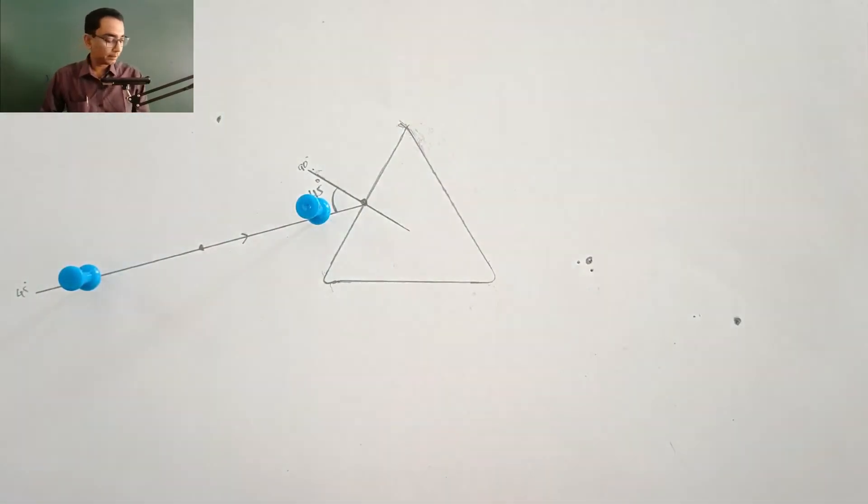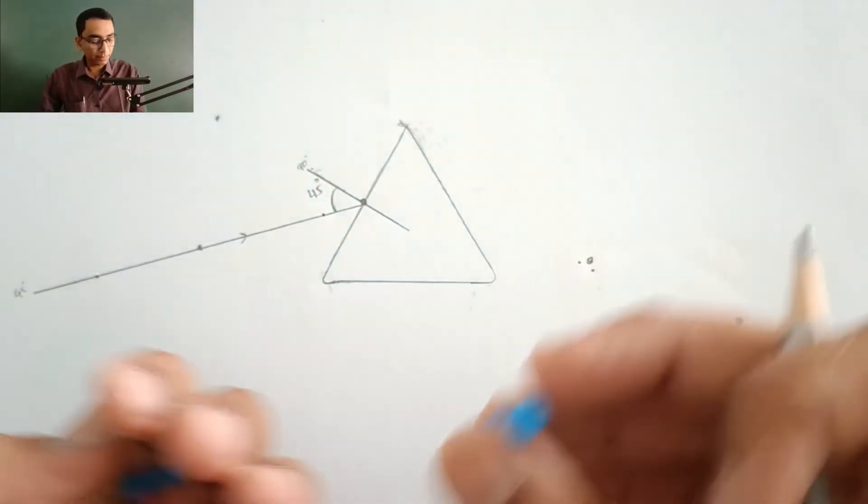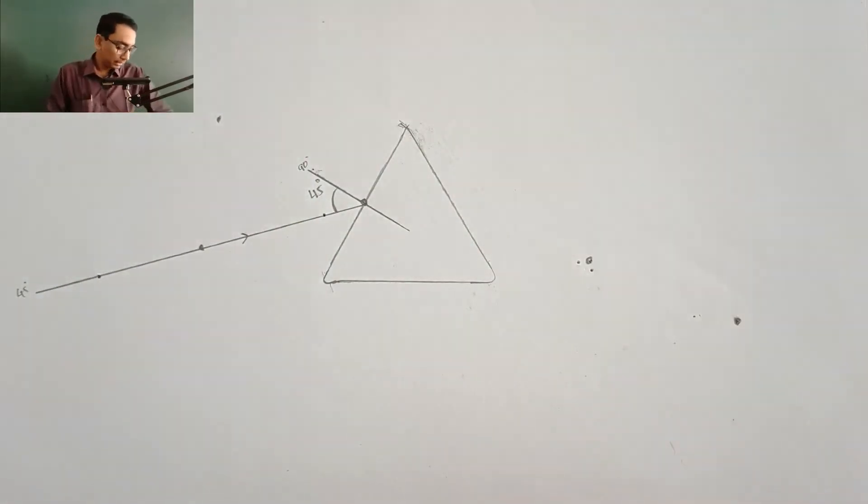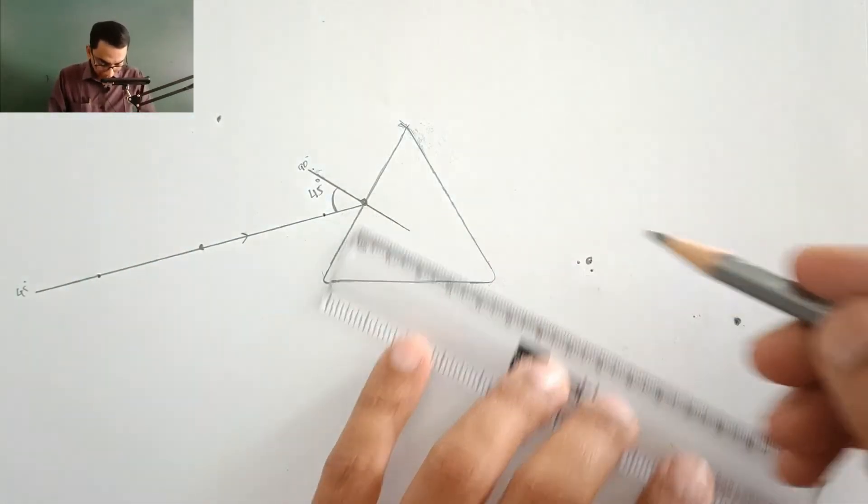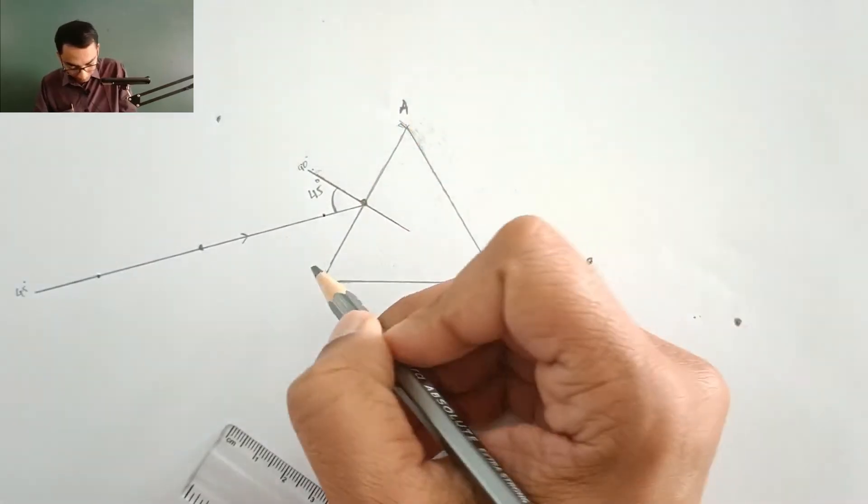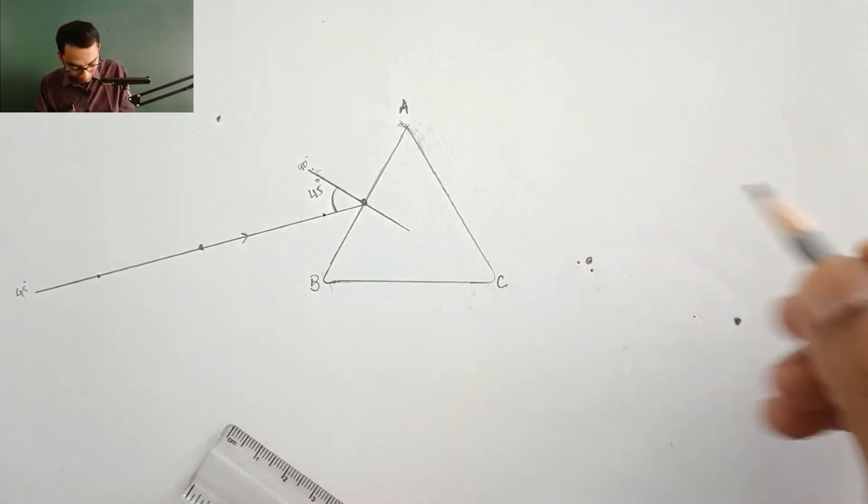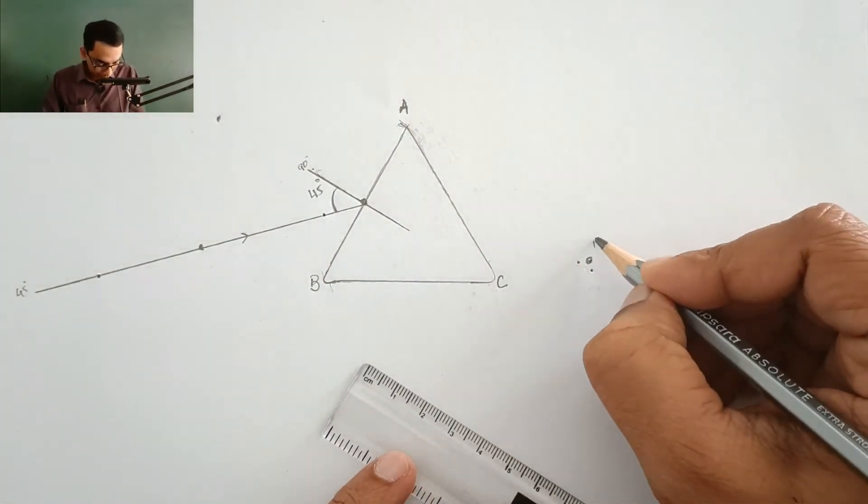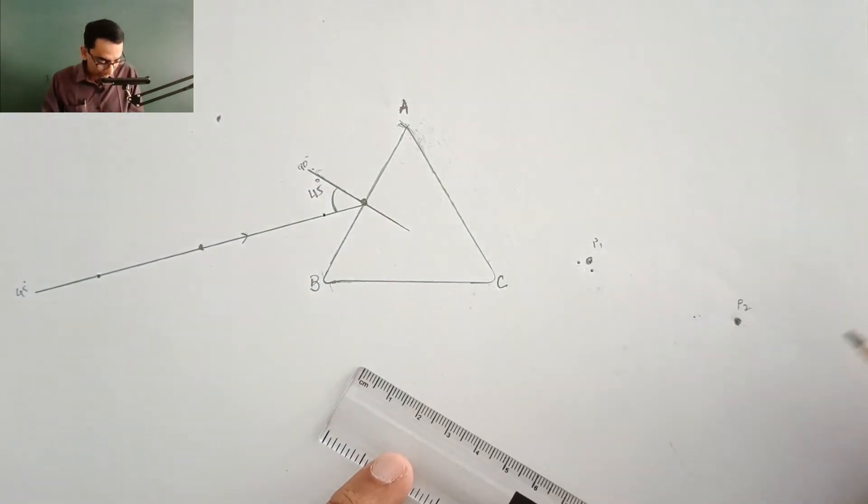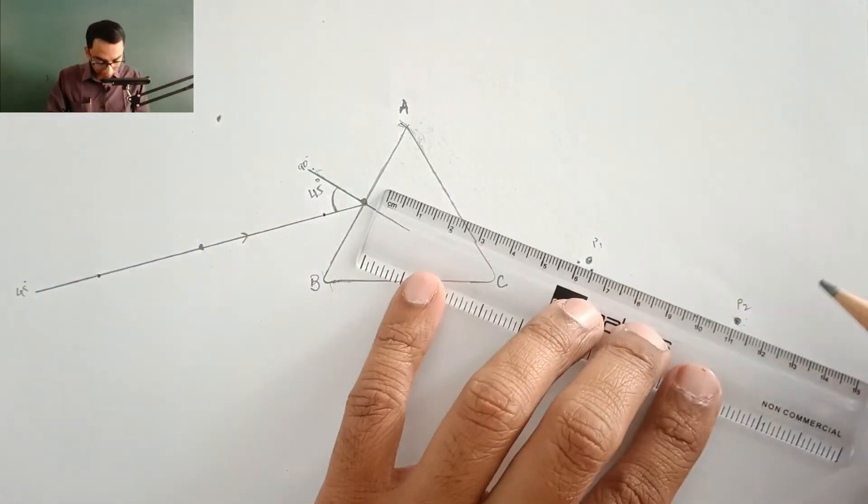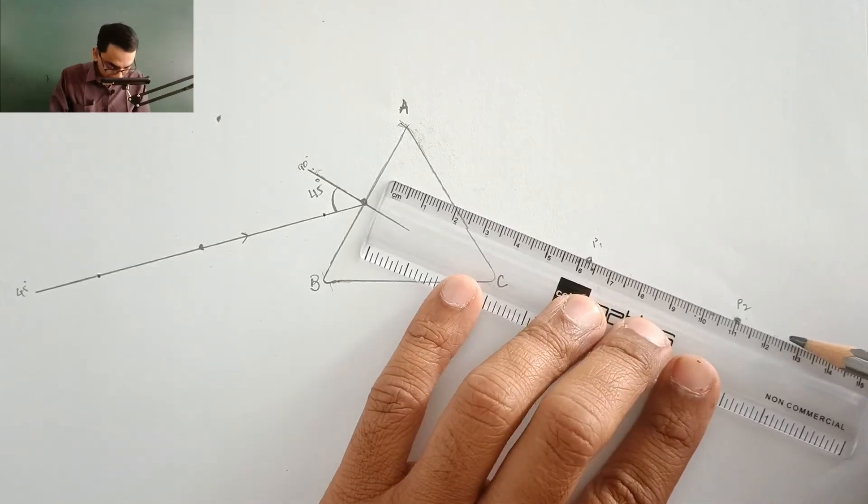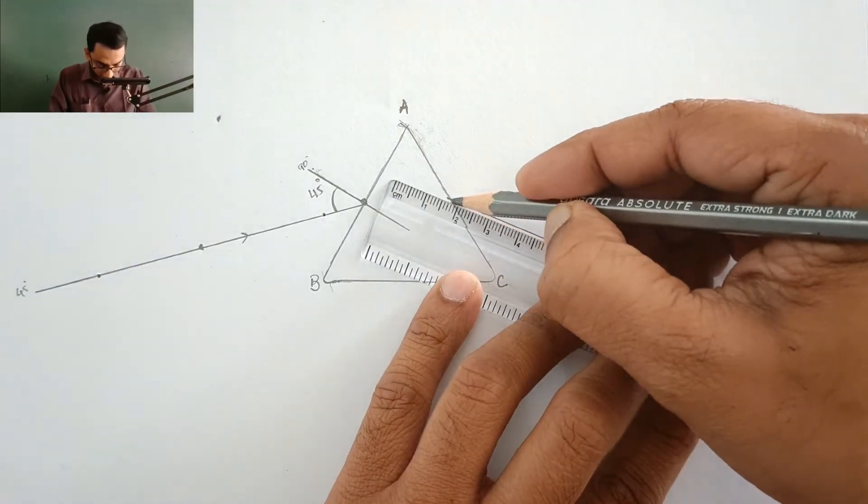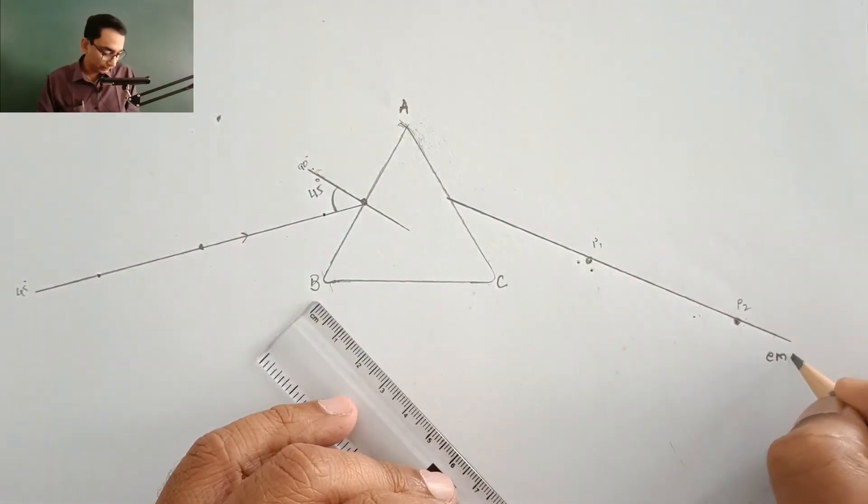I am going to place the prism back at a safe place. Remove these two pins and now I am going to join these two points with this prism surface. Let me name the prism surfaces as ABC. Then I am going to join these two points P1 and P2 which are the prick locations with the surface AC of the prism.